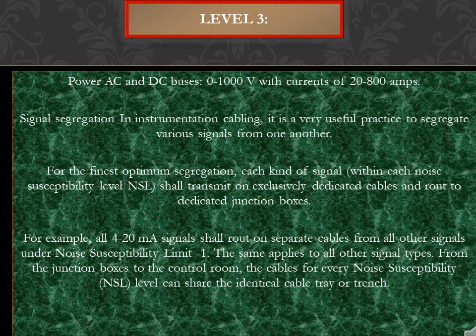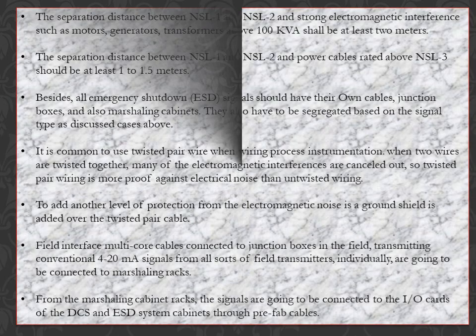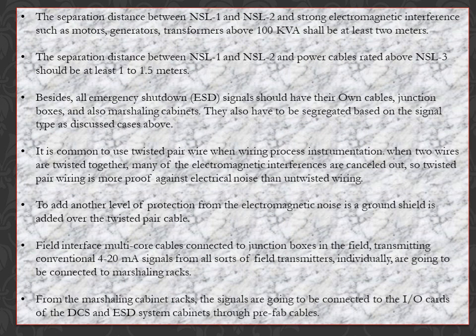From the junction boxes to the control room, the cables for every noise susceptibility level (NSL) can share the same cable tray or trench. The separation distance between NSL1 and NSL2 and strong electromagnetic interference sources such as motors, generators, and transformers above 100 kVA shall be at least 2 meters. The separation distance between NSL1/NSL2 and power cables rated above NSL3 should be at least 1 to 1.5 meters.